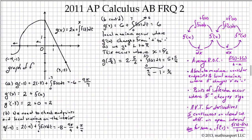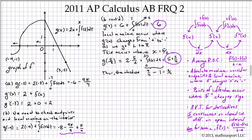Our choices come down to three possibilities: g(-4), which is clearly negative; g(3) = 6; and g(5/2) = 25/4 = 6.25. The conclusion is that the absolute maximum occurs at x = 5/2.